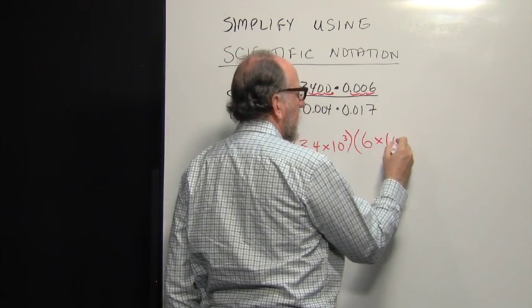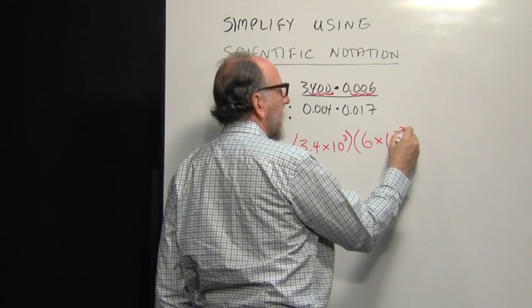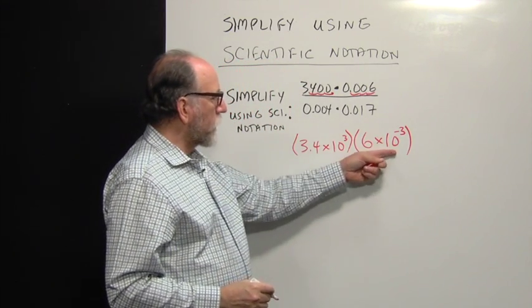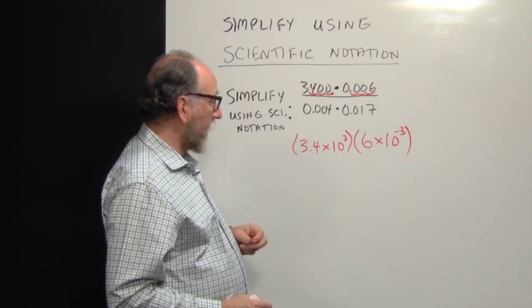6 times 10. And since I moved the decimal point to the right, I need a small number here. That's a negative exponent or a fraction of 10, a fractional power of 10, 1 over 10 to the third power, 1 one-thousandth.